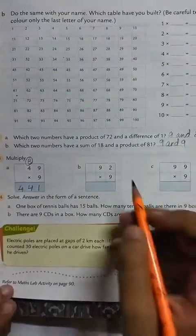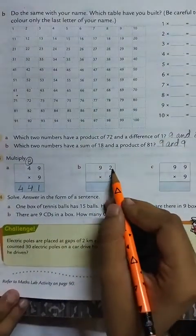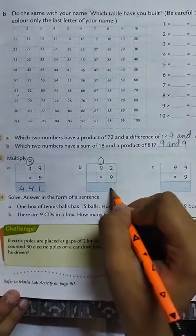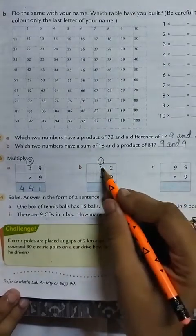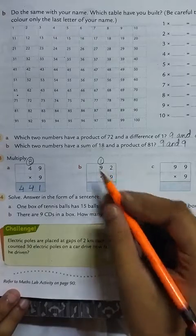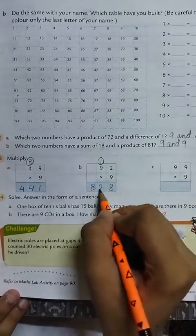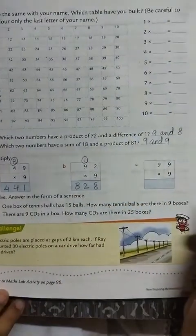Next question, 92 into 9. 9 twos are 18, 1 carry. 8 we will write in the ones place. 9 nines are 81, 81 plus 1, 82. The answer is 828.